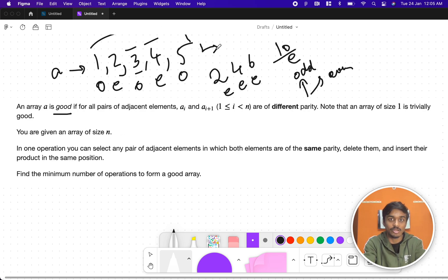They are telling that you are given an array of size n. In one operation you can select any pair of adjacent elements in which both elements are of same parity. I can't select here, I can't select here. So let's take one more example: 1, 1, 1, 2, 2, 3. You can select any pair of adjacent elements in which both elements are of same parity. Yes.